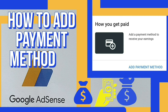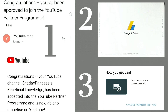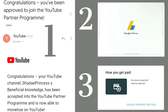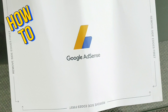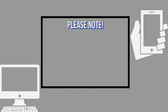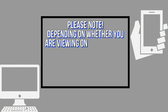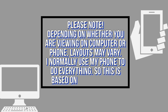Hi guys, so in today's video I'm going to tell you how to add a payment method on Google Adsense. This video assumes you've already been monetized, you've already received your PIN via post, and now the final stage is for you to set up your payment details so that you can actually get paid. I did a video about Google Adsense PIN verification — if you haven't seen that video I suggest you check that out, it's a complete guide. Please note, depending on whether you're viewing on your computer or your phone the layout may vary — this is based on phone format.